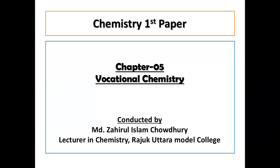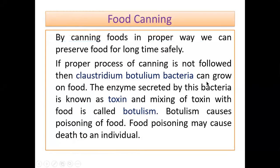At first, I will discuss about what is food canning. By canning foods in a proper way, we can preserve food for a long time, safely. It is called food canning. If the proper process of canning is not followed, then Clostridium botulinum bacteria can grow on food. The enzyme secreted by the bacteria is known as toxin, and the mixing of toxin with food is called botulism. Botulism causes poisoning of food, and food poisoning may cause death to an individual. So, proper food canning is needed for us.